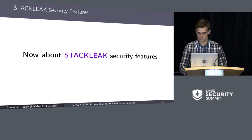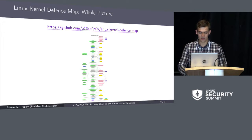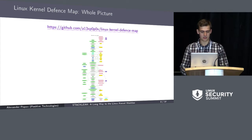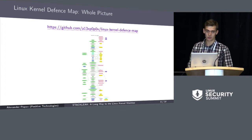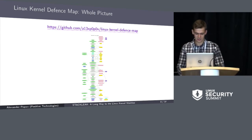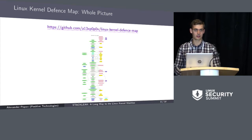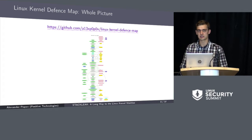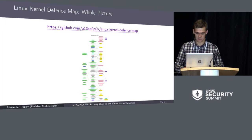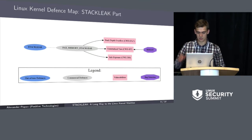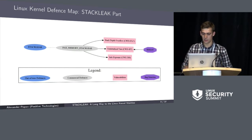Now about StackLeak security features — what does it provide? First I want to show you this map describing the Linux kernel security area. The only thing you should see on this slide is that you don't see anything, because the area is very complex. There are a lot of different kinds of vulnerabilities, exploit techniques, and Linux kernel security features which mitigate them, and there are a lot of interconnections. I give a link to the repository. That is the part of this map about StackLeak.